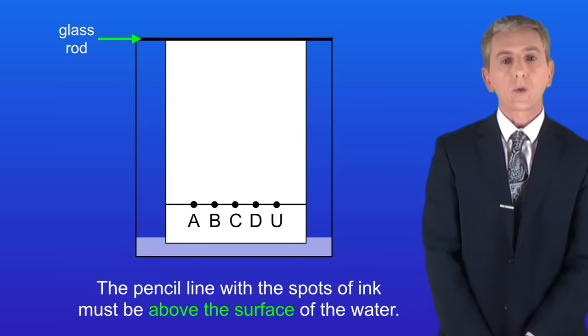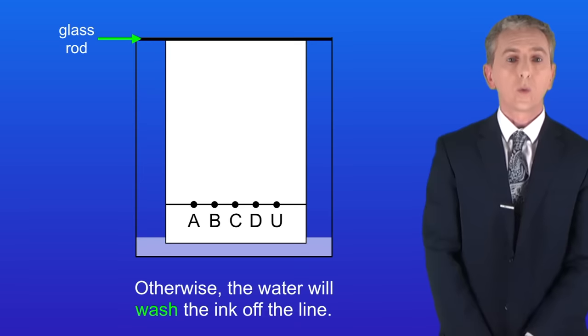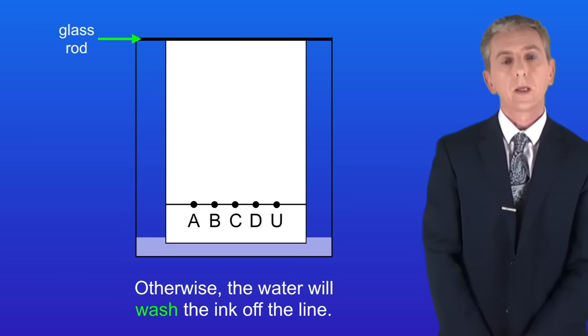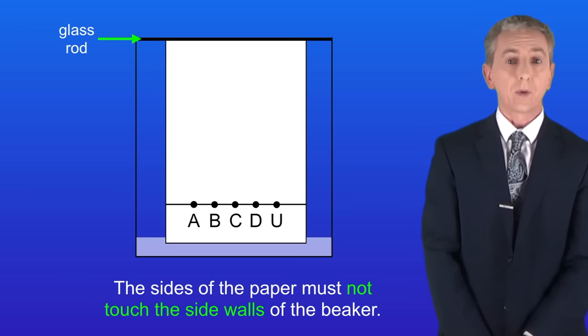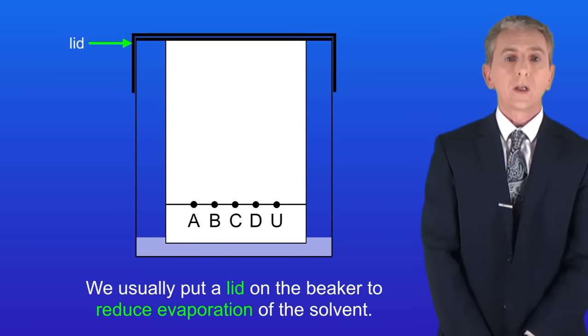Now there are three key points here. Firstly the pencil line with the spots of ink must be above the surface of the water, otherwise the water will wash the ink off the line. Secondly the sides of the paper must not touch the side walls of the beaker. If that happens then it will interfere with the way that the water moves. And lastly we usually put a lid on the beaker to reduce evaporation of the solvent.